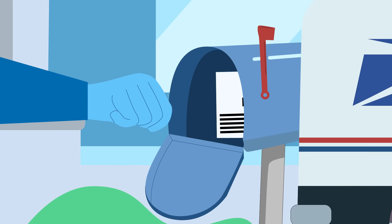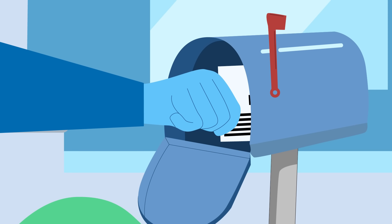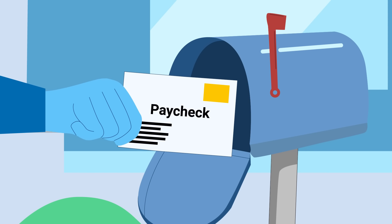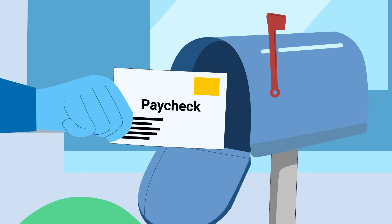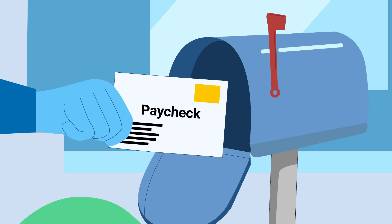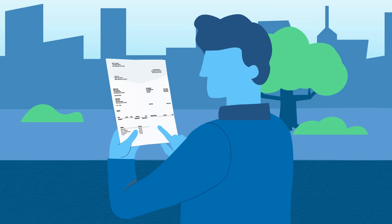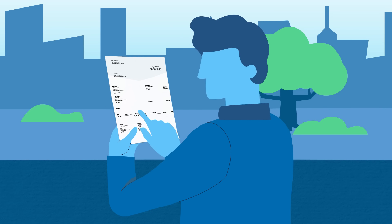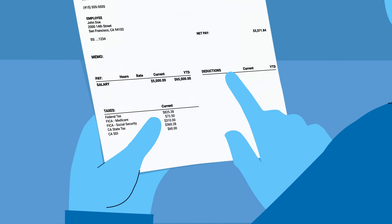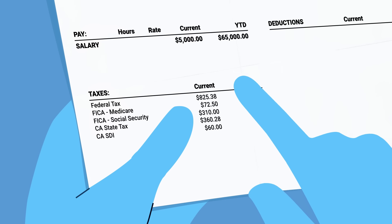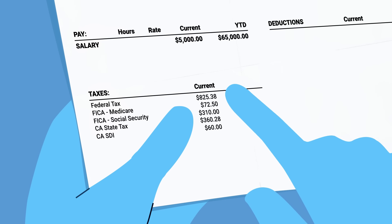And in the U.S., one look at a pay stub shows us that there are different levels and different types of taxes. The taxes that come out of your paycheck are taxes on what you earn, which include income taxes and social insurance taxes.